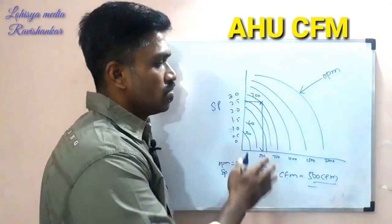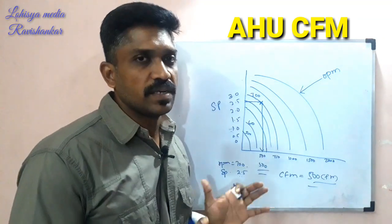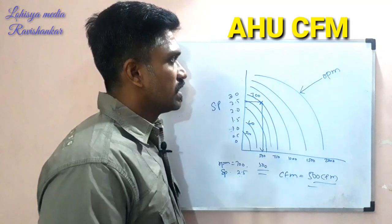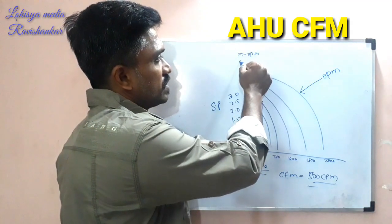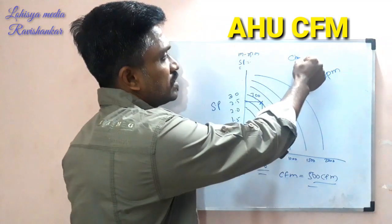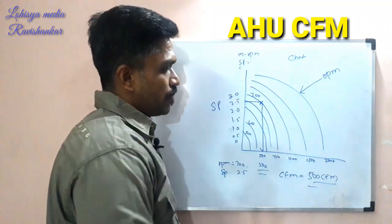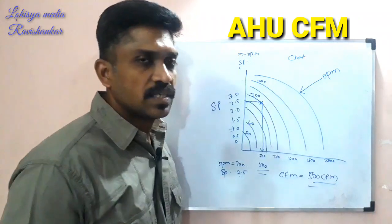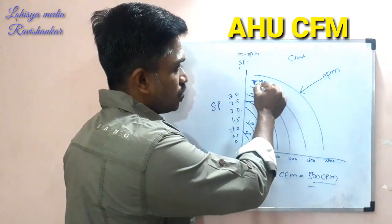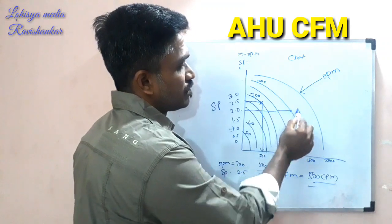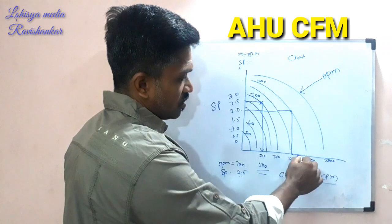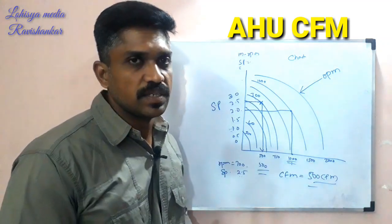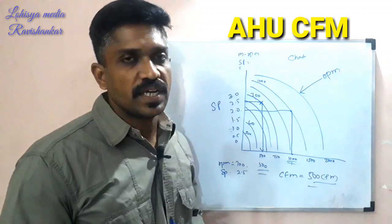You can use this method. This is a simple and basic method. We need motor RPM, static pressure, and a chart — these three inputs. For example, suppose the motor is 1000 RPM and static pressure is 2. In the 1000 RPM line, the AHU is 1000 CFM. Now you can calculate the CFM — AHU is 1000 CFM.